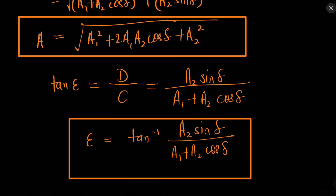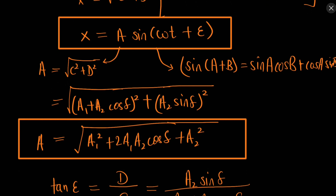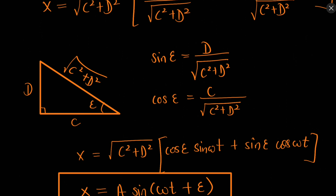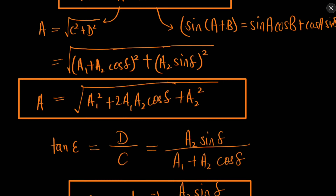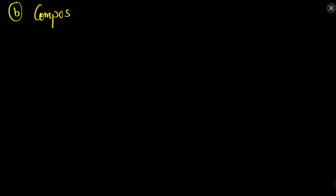So the amplitude is given by that formula and epsilon is given by that formula. Now let us move on to the next composition. Here in this second composition, we will be discussing the composition of two SHMs in perpendicular directions.